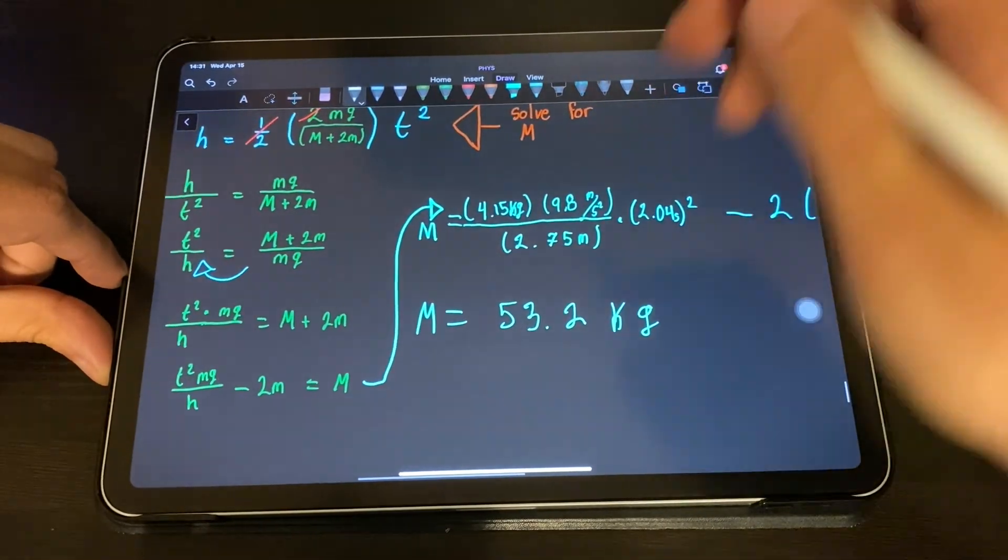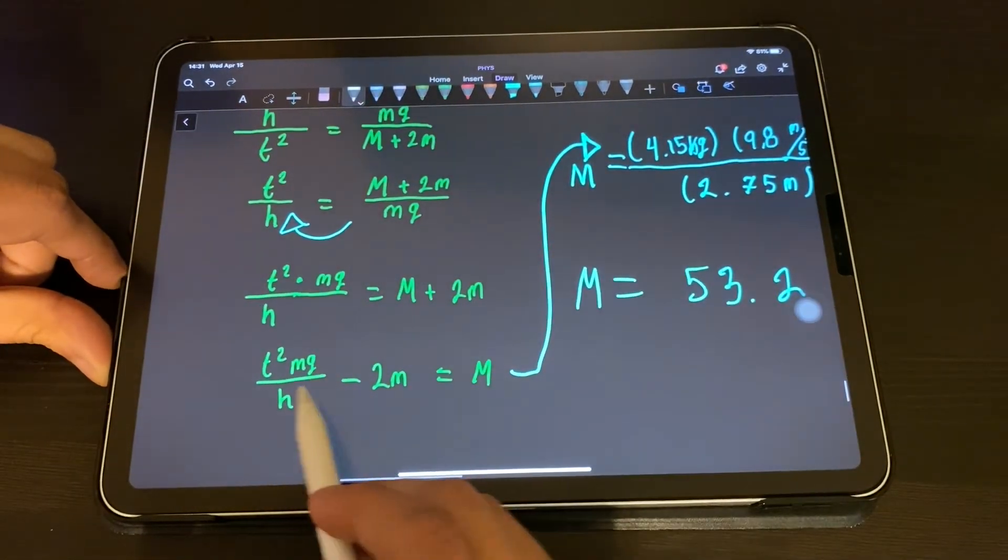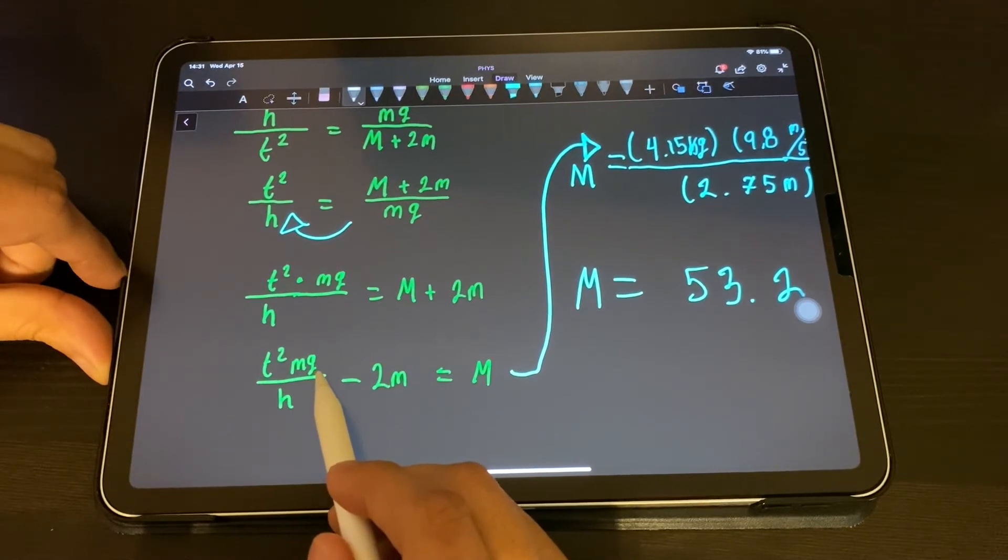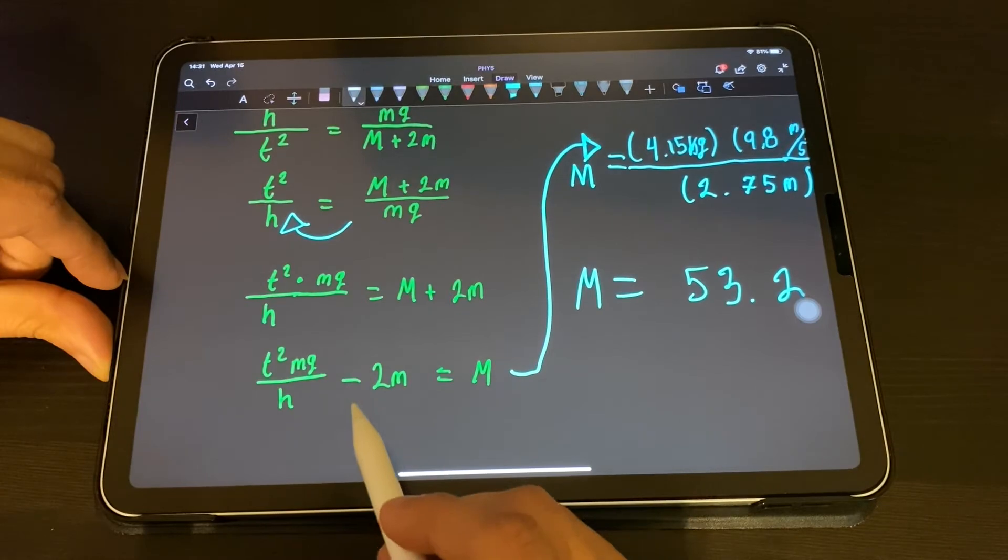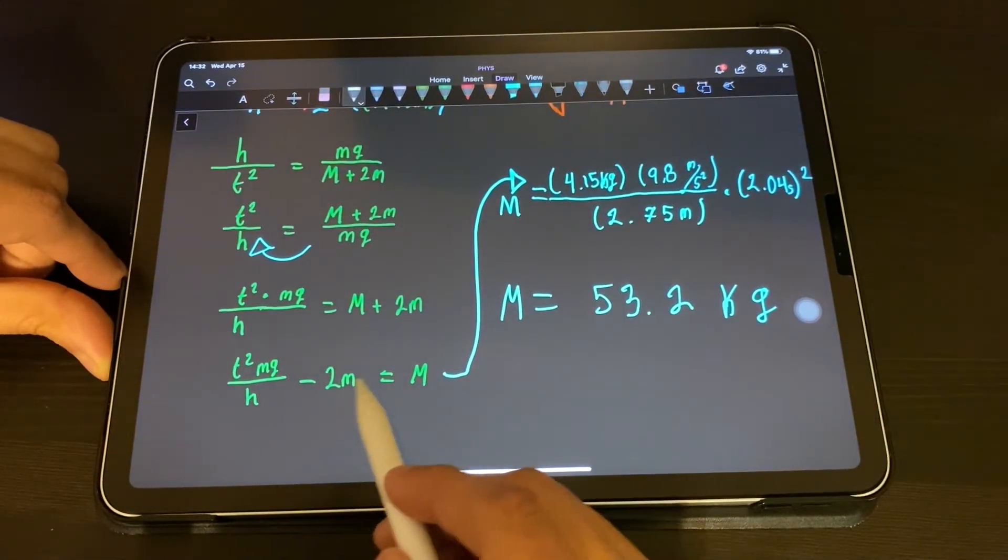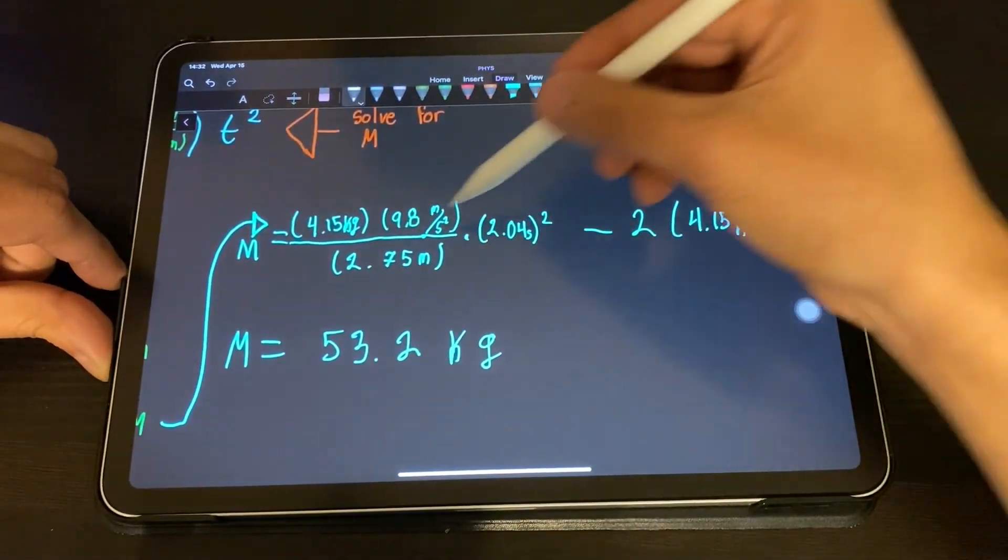We have the mass of the object times gravity times the time squared divided by the distance minus 2m, which is the mass of the object. So we plug in those numbers.